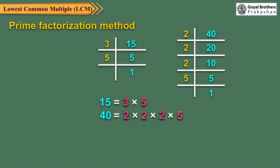So, LCM of 15 and 40 is equal to 2 × 2 × 2 × 3 × 5 = 120.